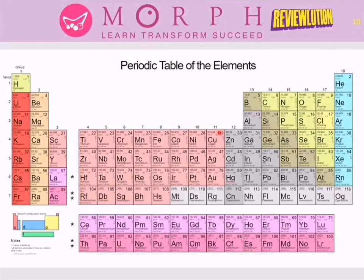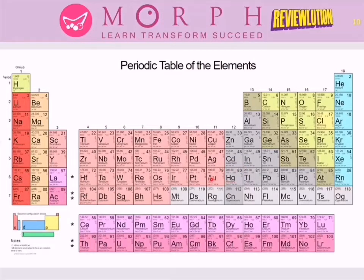To change an element by altering protons would require enormous energy — nuclear energy. In electronics, we only work with electrons, not protons. Another identity of an element is the atomic mass, which is the combined mass of protons and neutrons. The mass of the electron is not included because it is negligibly light — the mass of a proton is 1,836 times the mass of the electron.